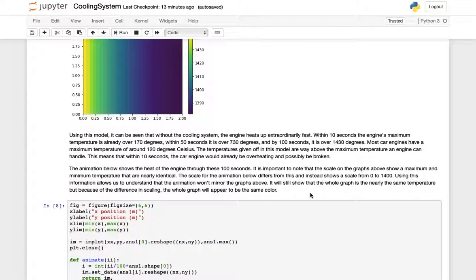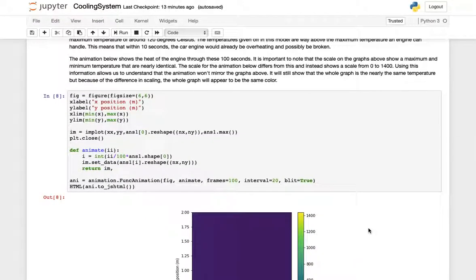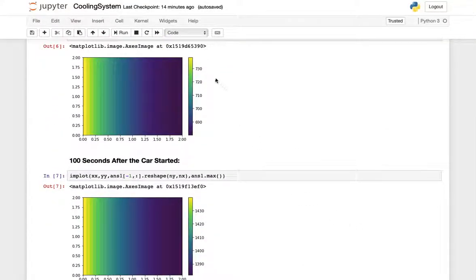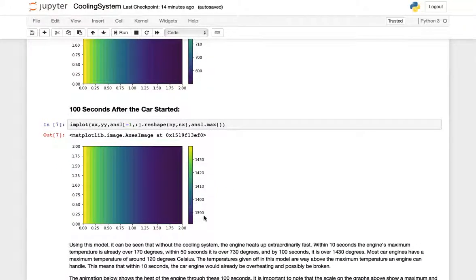Next we have an animation showing this with time. Instead of looking at individual slices we can look at the whole animation. It's important to note that if we look back at the scaling, the maximum temperature is very close to our minimum temperature. The maximum is about 730 and the minimum is 690. Maximum here is 1430 the minimum is 1390.